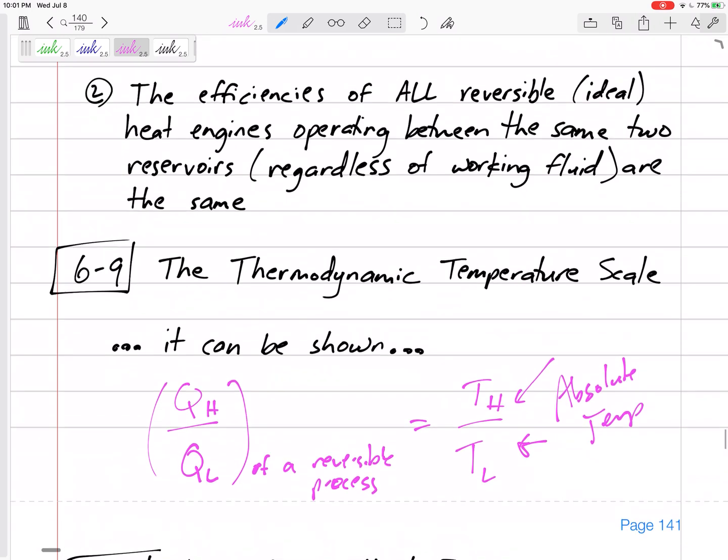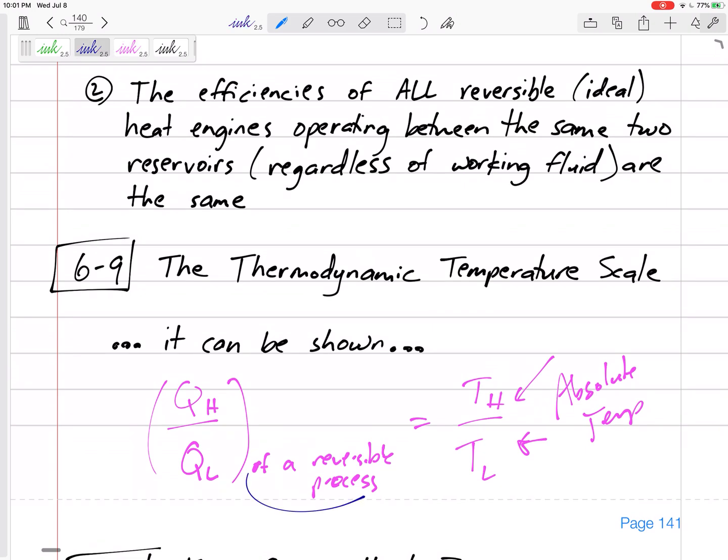What does that mean? That means if we have a reversible process, remember all those equations that had QH and QL in it, or all those equations that had this ratio of QH to QL. Now, we can plug in TH to TL in those for reversible processes.